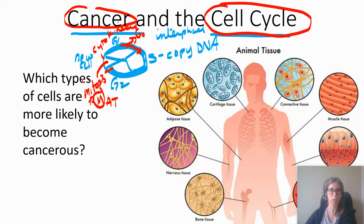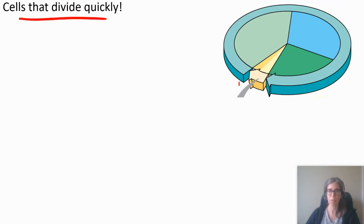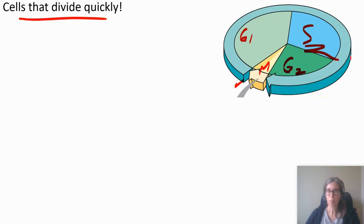As a preview: which types of cells are more likely to become cancerous? You don't need to memorize cell types, but what you need to see is that cells that divide quickly are more likely to become cancerous. Here's G1, brand new cell, synthesis, G2, and mitosis. If the cell goes through mitosis a lot, then it's copied its DNA many, many times, which means it's more likely to have made a mistake at some point.